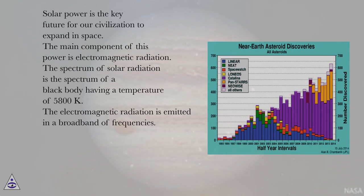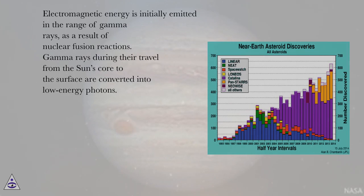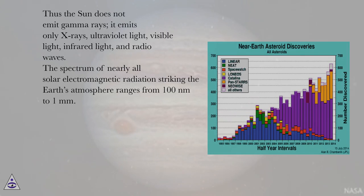The main component of solar power is electromagnetic radiation. The spectrum of solar radiation is that of a black body having a temperature of 5,800 K, emitted in a broad band of frequencies. Electromagnetic energy is initially emitted in the range of gamma rays as a result of nuclear fusion reactions. Gamma rays during their travel from the sun's core to the surface are converted into low-energy photons. Thus the sun does not emit gamma rays — it emits only X-rays, ultraviolet light, visible light, infrared light, and radio waves. The spectrum of nearly all solar electromagnetic radiation striking the Earth's atmosphere ranges from 100 nm to 1 mm.